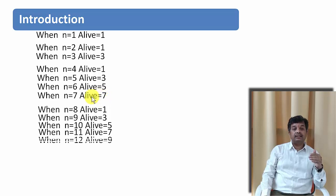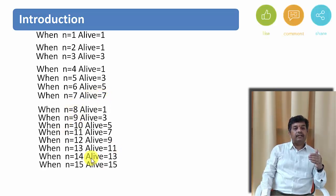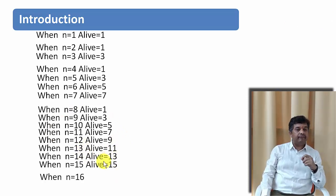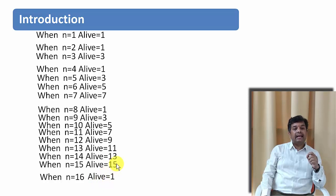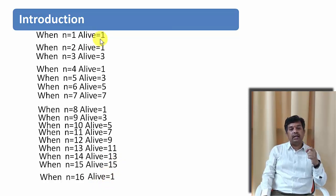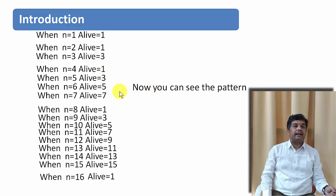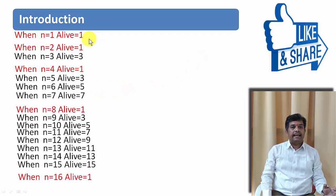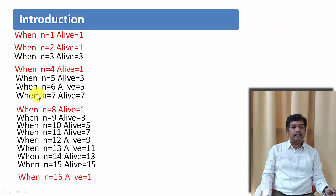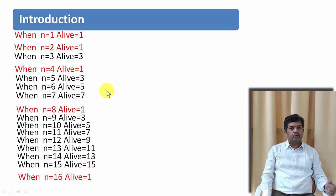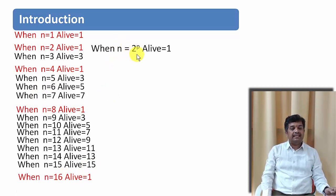Can we guess the next series? Following this pattern, when N equals 15 alive will be 15, and when N equals 16 alive will be 1. Now we can see the pattern: when N equals 1, 2, 4, 8, or 16 — that is, when N is in the form of 2 to the power p — alive equals 1 in all those cases.